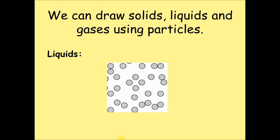When drawing liquids, the particles are not in neat rows. Not all of the particles are joined together. Because not all of the particles are joined together, liquids can flow. This is because the particles move over each other.